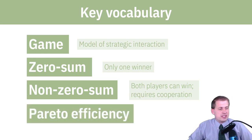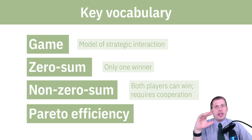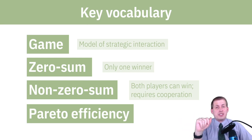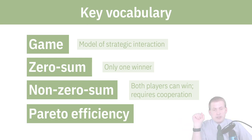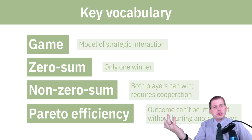Then we have this idea called Pareto efficiency, which we'll talk about especially in the next session. It has a very specific meaning in economics and in setting policy. The idea behind Pareto efficiency is that an outcome — whatever the two players decide to do — cannot be changed or improved without hurting somebody else. So if one person gets a $5 reward for choosing an option,